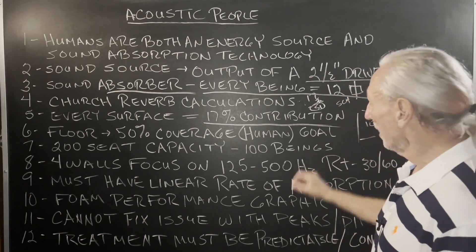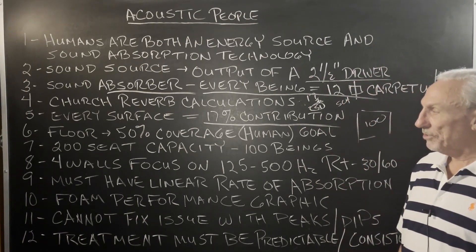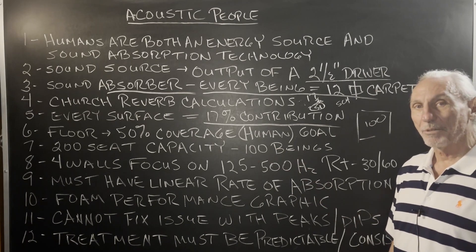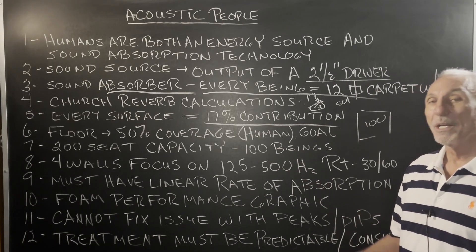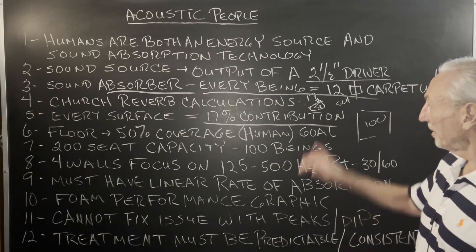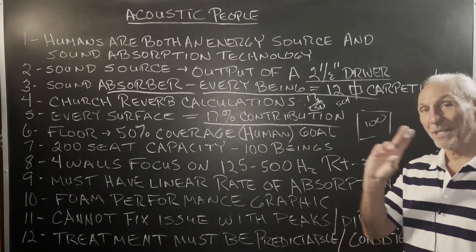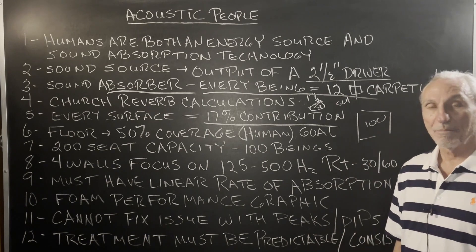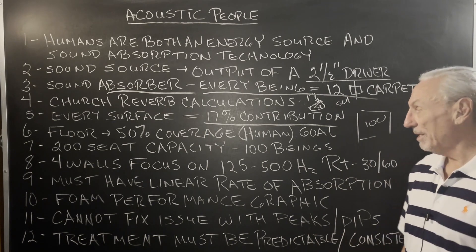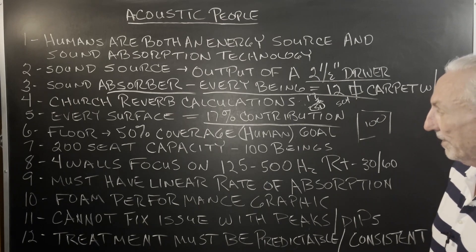So we calculate, when we're doing churches, about a 50% occupancy coverage on the floor. If you've got a 200-seat venue, you've got a hundred people on average. So you've got a hundred times 12 square feet of carpet — that's 1,200 square feet of one-inch-thick material on the floor. That's how we quantify and qualify everything.